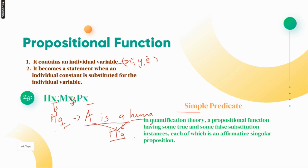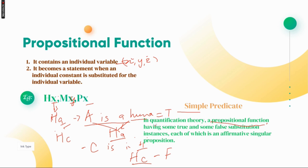In quantification theory, a propositional function having some true and some false instances — so if we say 'Aristotle is human,' it is true. But if you take Hx and substitute Chicago, 'Chicago is in Hyderabad' would be false. So a propositional function can yield true or false depending on what constant is substituted. Each of which is an affirmative singular proposition — take care, this is affirmative, not negation.